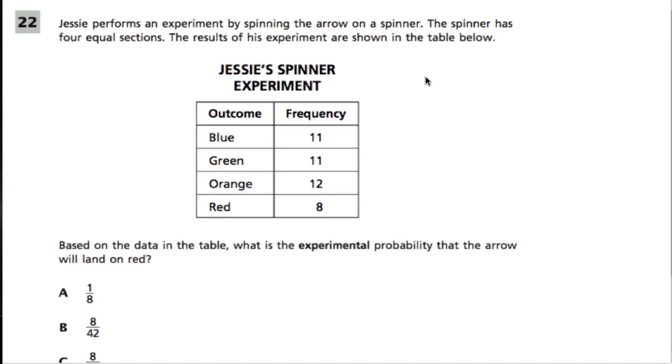All right, so if you're given a spinner and you know it has four equal sections and you're spinning it over and over again, that means that each section has an equally likely chance of happening.